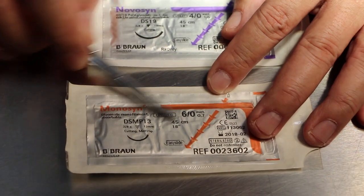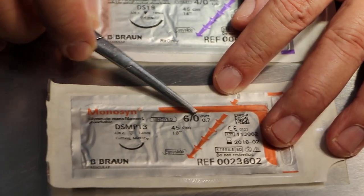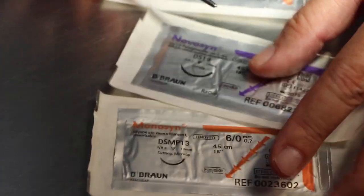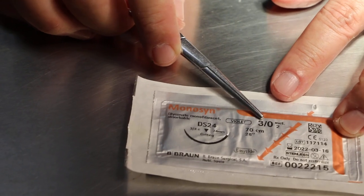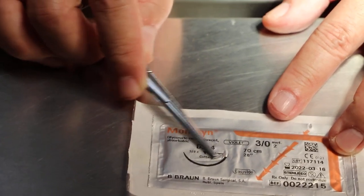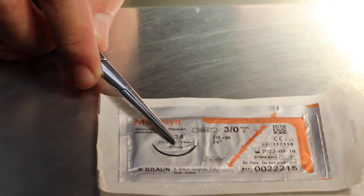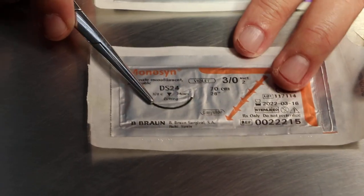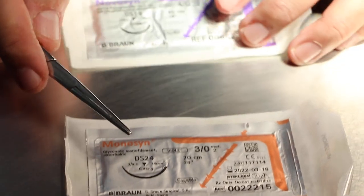6-0 is more for eye, cornea and very fine areas. So, 3-0 definitely is out. As you can see 3-0 is thicker and the needle is longer and thicker. Anyway, this is each vet's preference.